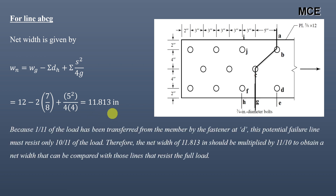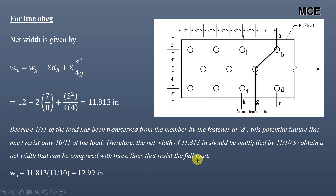For this failure line, 1/11 of the load would already have been transferred by the fastener at D, so this failure line would resist only 10/11 of the load. Multiplying the net width by 11/10 gives an adjusted net width W_N = 12.99 inch.